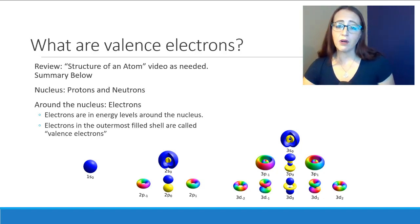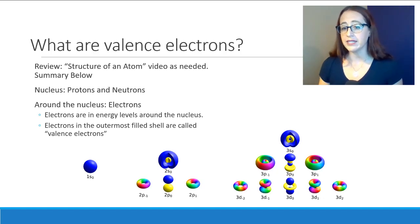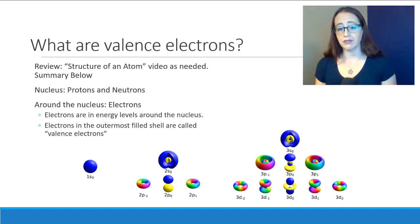But for now, all we need to know is that electrons that are lower in energy are closer to the nucleus, and electrons that are higher in energy are further from the nucleus. The electrons that are in the highest energy level are called valence electrons.